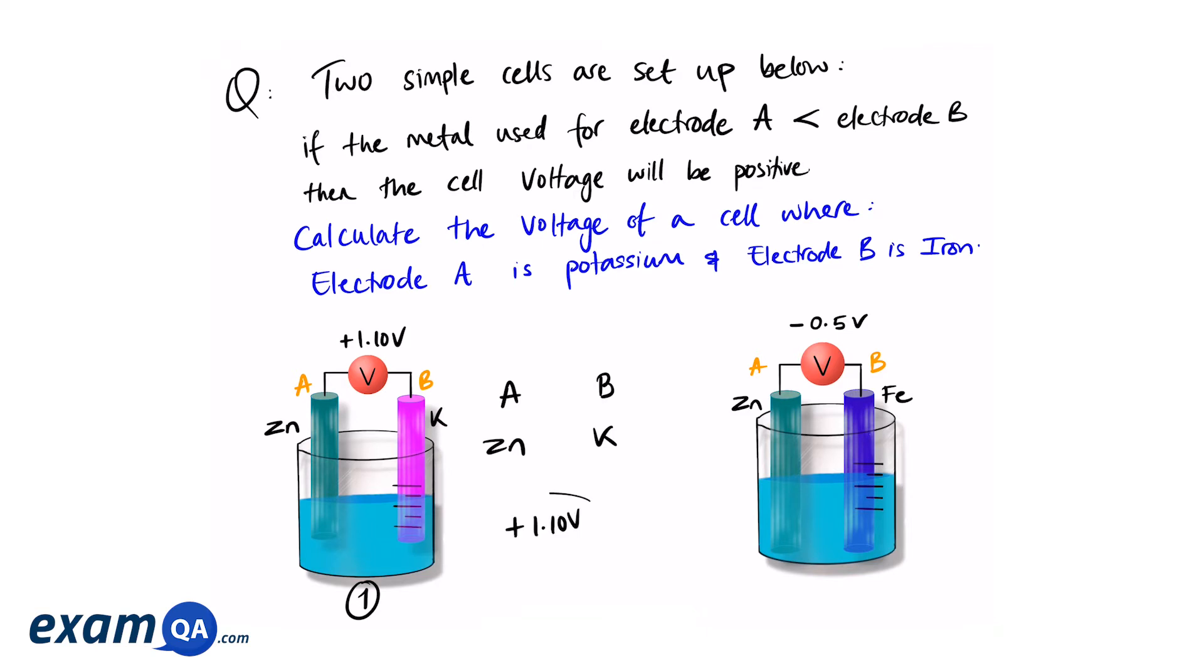Now the overall cell voltage is plus 1.10 volts, which means it's a positive number. And now referring back to the question, if electrode B is more reactive than electrode A, the voltage will be positive. Therefore, we can assume that B is more reactive than A, so potassium is more reactive than zinc. And we'll call that difference 1.1 volts.